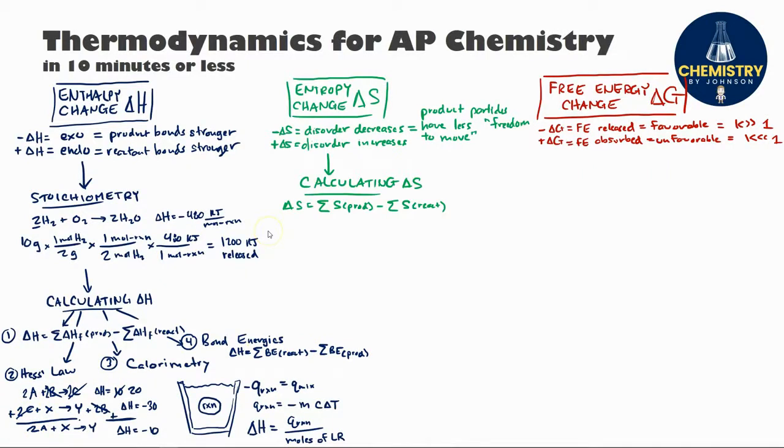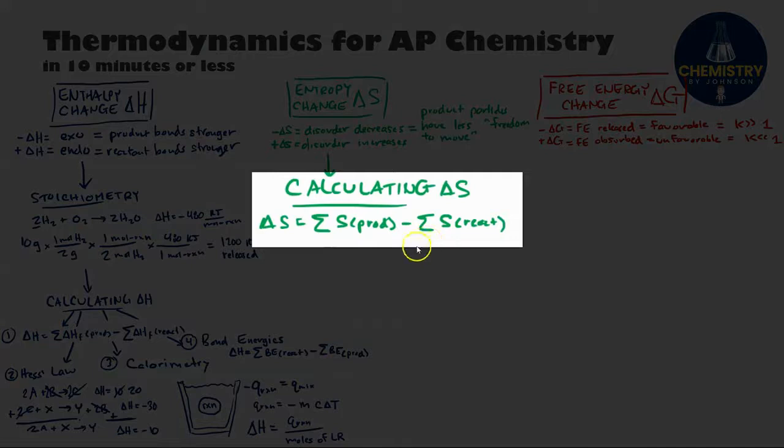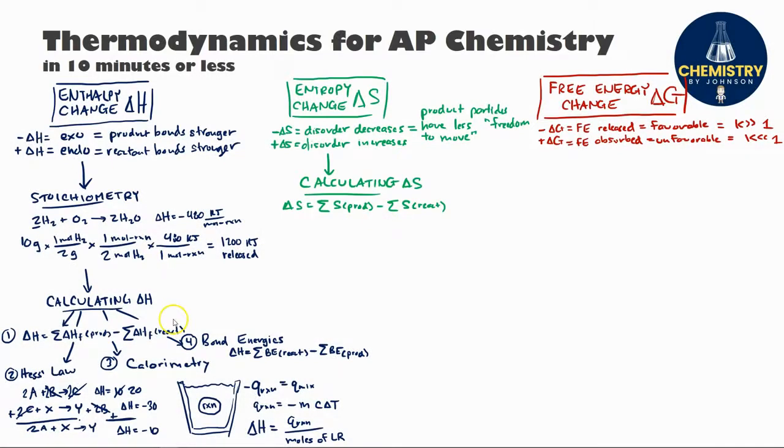Luckily, calculating entropy changes are a lot simpler. There's really only one common way to do it. You can get the delta S by adding up all the entropy values of the products and subtracting out the entropy values of the reactants. It's more common rather than doing the actual calculation of delta S to instead make general predictions about whether the sign will be negative or positive for a given reaction.